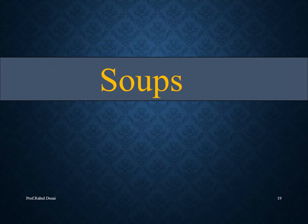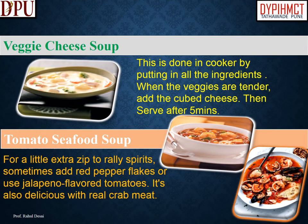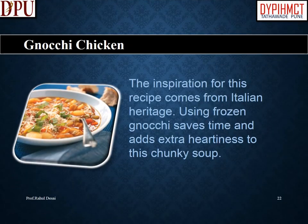Popular soups of North America: Rustic Italian tortellini soup is full of healthy, tasty ingredients, made with turkey sausage or ground turkey breast. Hearty chipotle chicken soup features sweet corn, cool sour cream, and the smoky hot flavors of chipotle pepper. Veggie cheese soup is prepared in a cooker with all ingredients; when the veggies are tender, add cubed cheese and serve after 5 minutes. Tomato seafood soup can include red pepper flakes or jalapeño-flavored tomatoes and is delicious with real crab meat. Gnocchi chicken soup is inspired by Italian heritage and uses frozen gnocchi for extra heartiness.